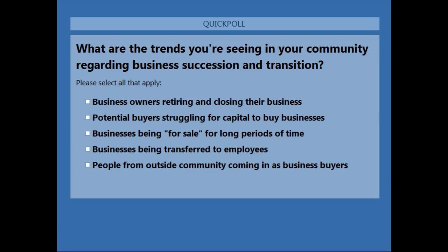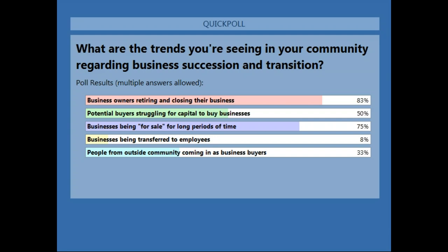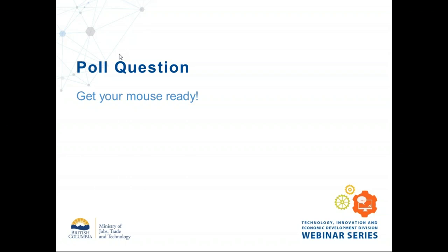The poll options include: business owners closing and retiring, potential buyers struggling for capital, businesses being for sale for long periods of time, businesses being transferred to employees, and people from outside the community coming in. We've got about 75% voter turnout — I'll close the poll now. Results: 83% are seeing business owners retiring and closing their business; 50% see potential buyers struggling for capital; 75% see businesses for sale for long periods; only 8% see businesses transferred to employees; and 33% see outside buyers coming in.